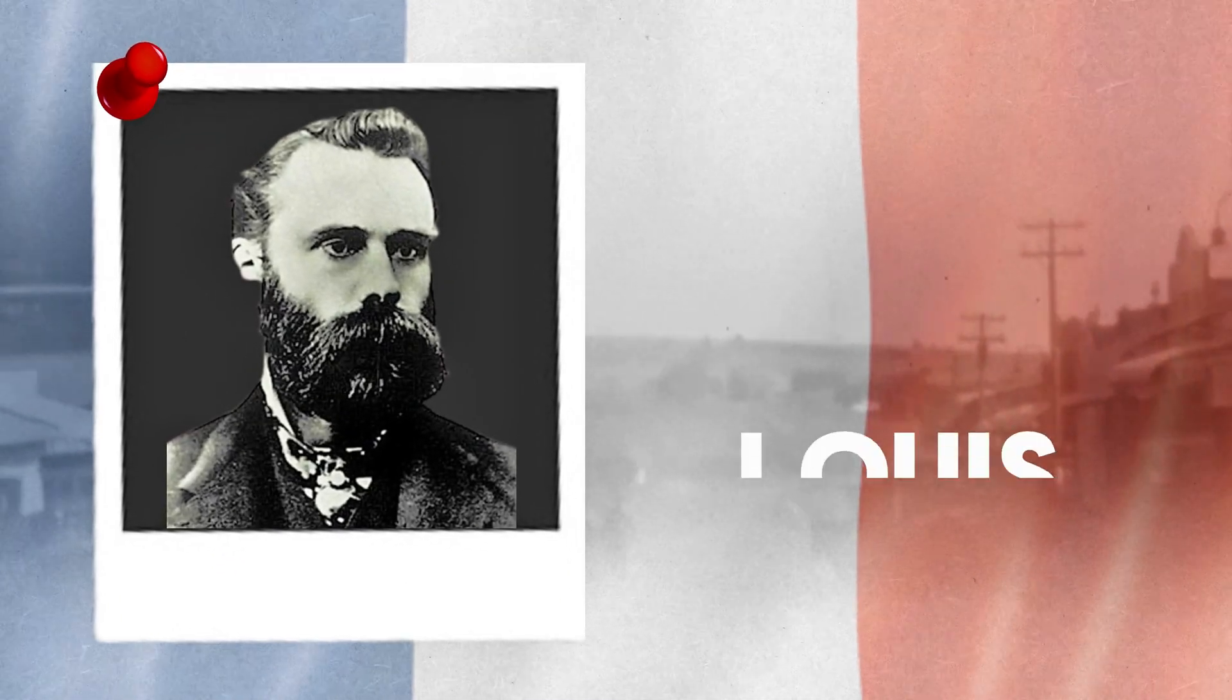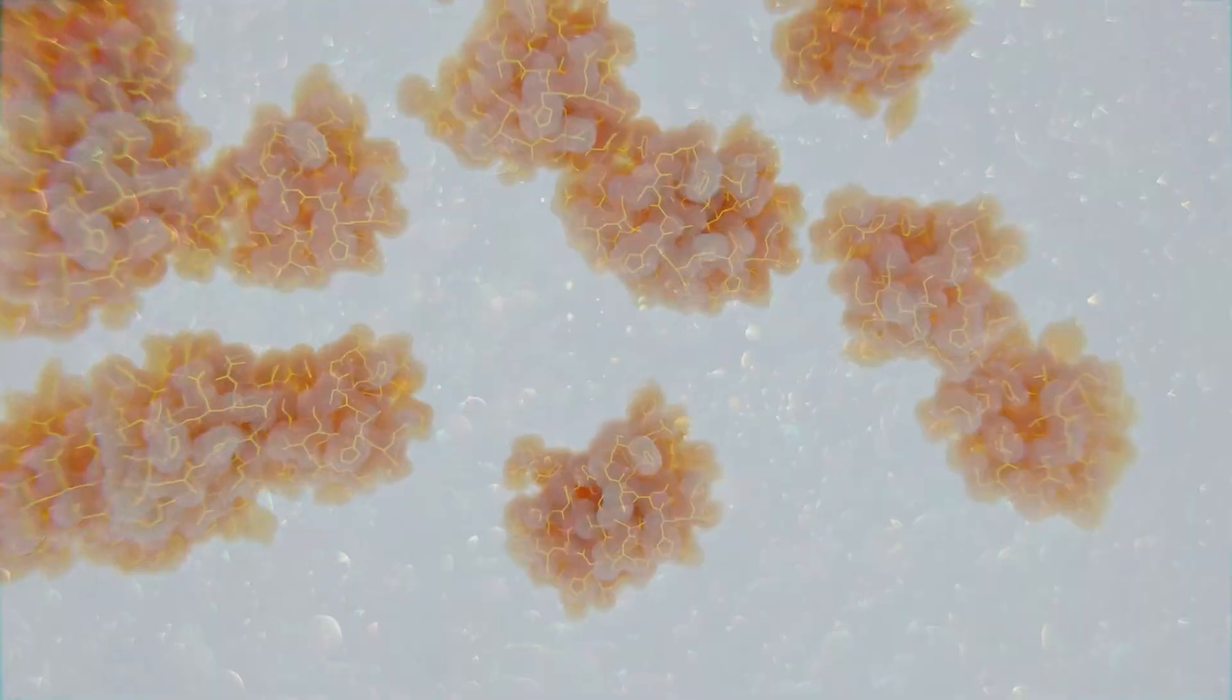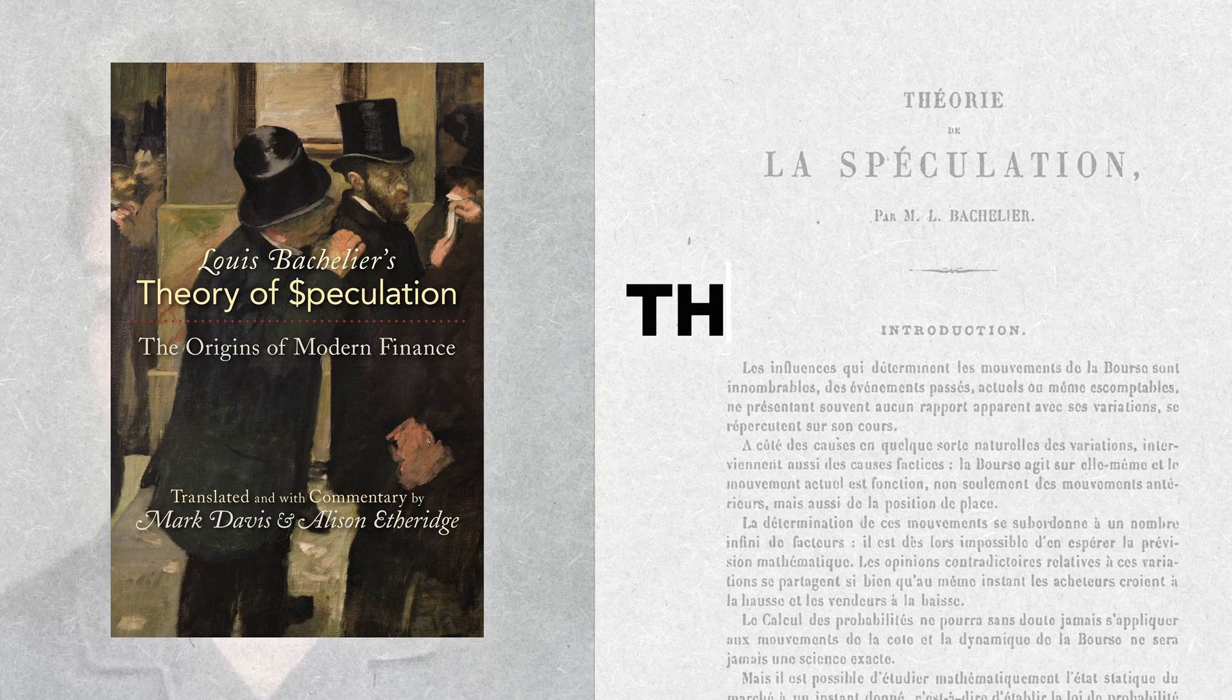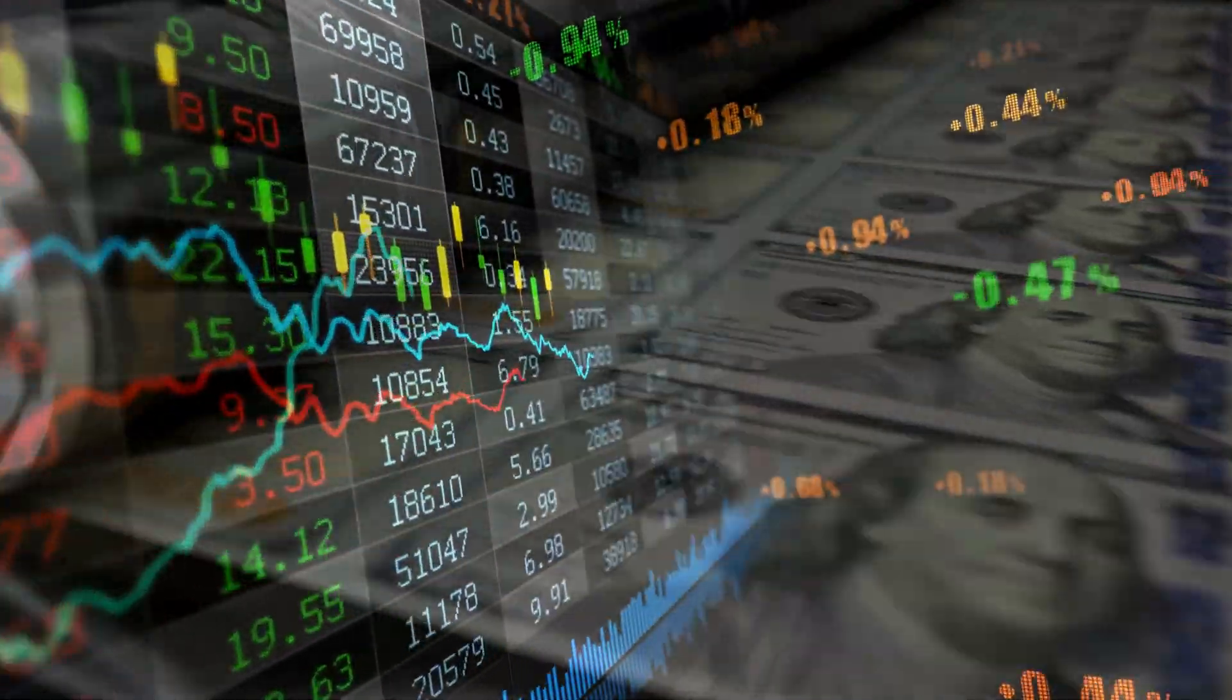In the late 19th century, a French mathematician named Louis Bachelier introduced groundbreaking concepts like random walks and Brownian motion in his 1900 doctoral thesis, The Theory of Speculation, paving the way for future developments in financial modeling.